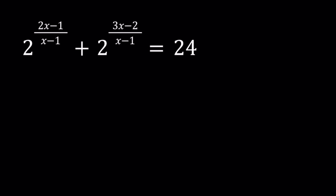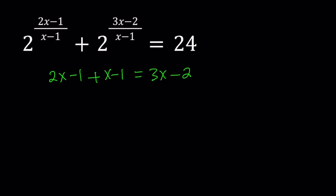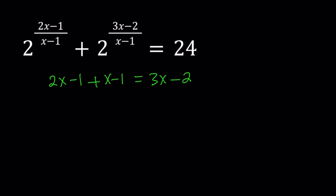First of all, I want you to notice that if you add 2x minus 1 and x minus 1, you get 3x minus 2. Adding like terms, simple, right? Now, how can we use that information in the problem? Notice that we have 3x minus 2 here and 2x minus 1 here. And these two fractions have the same denominator, which is x minus 1. So we're going to use that fact.